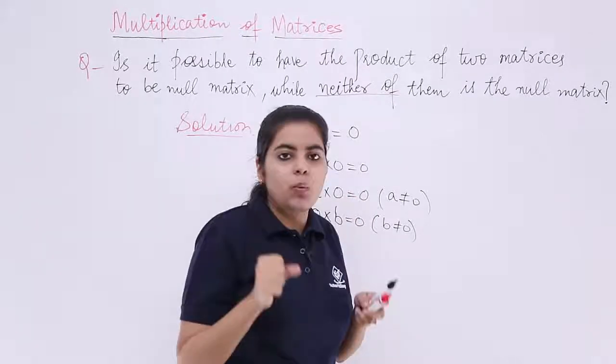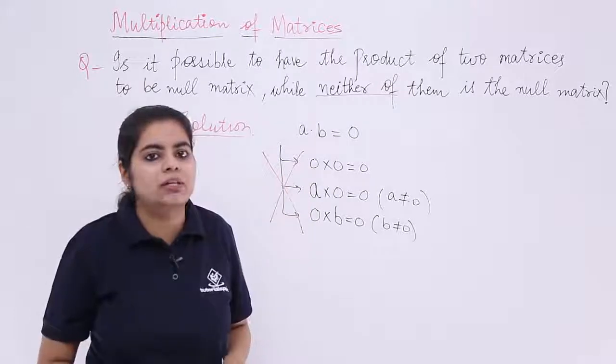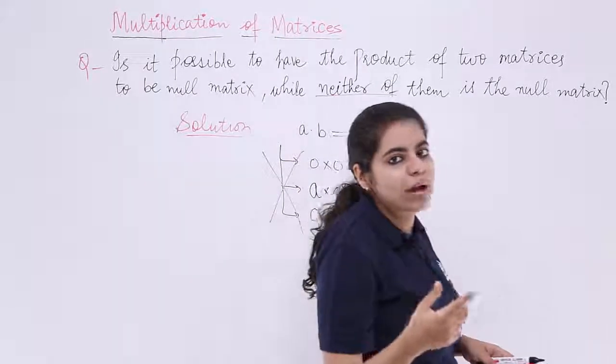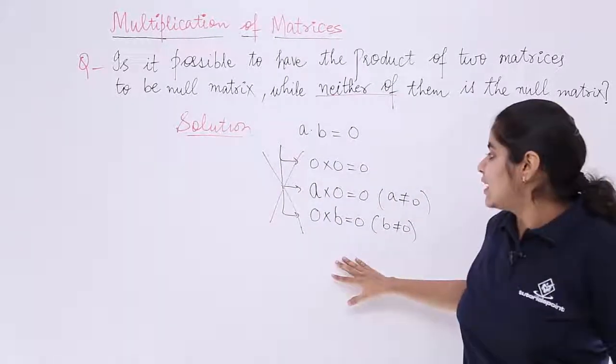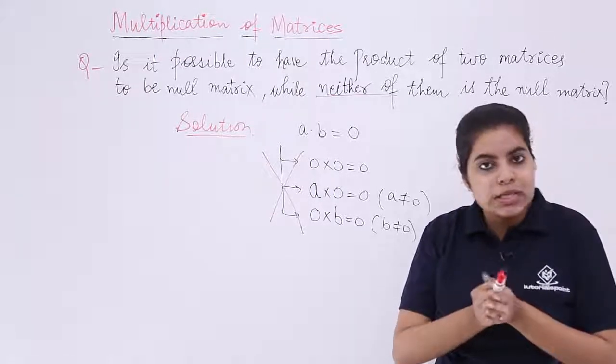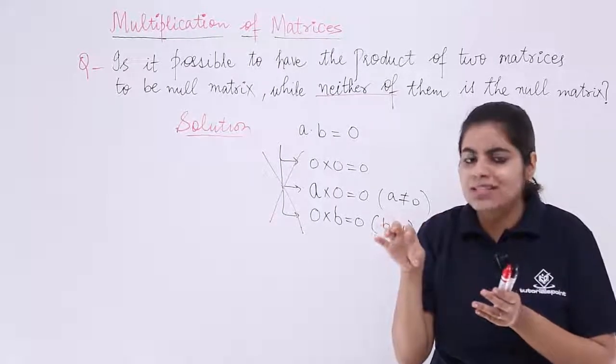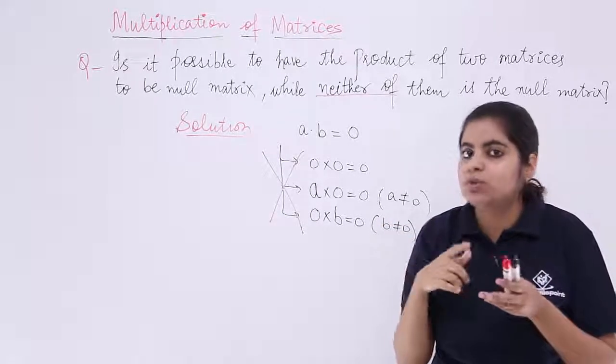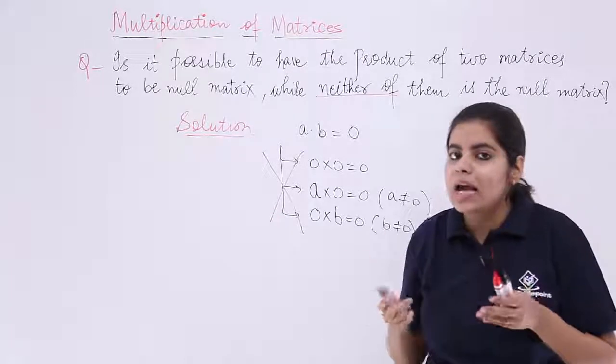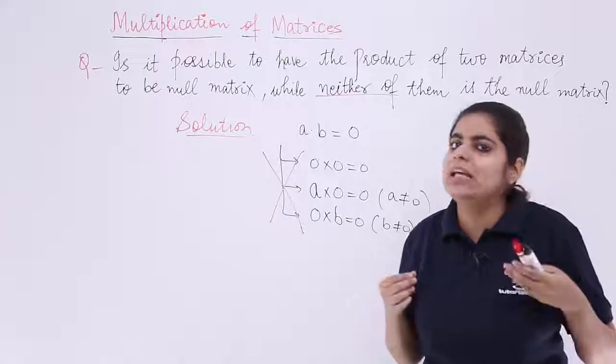Think of some example wherein I have no matrix as null but still the product is a 0 matrix or a null matrix. Now in such case it will go by hit and trial and by regular practice you will come to know. Suppose I take a matrix wherein I have a row as 0s so that it is possible to obtain 0s later and in some column as 0.